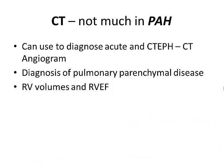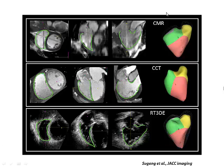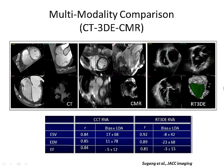In terms of CT, there isn't much specific to PAH. It has some use — all our PH workups do get high-resolution CTs, usually to diagnose pulmonary parenchymal disease and help rule out chronic thromboembolic pulmonary hypertension. CT can also evaluate RV volumes and ejection fractions, giving the same views as CMR and real-time 3D echo. Using MR as reference standard, ejection fraction bias is quite small, while echo tends to underestimate volumes and CT tends to overestimate, possibly due to better spatial resolution.